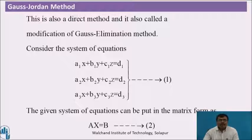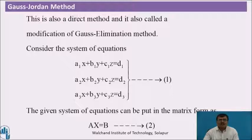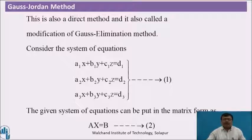I explain this method by considering three equations in three unknowns. That is: a1x + b1y + c1z = d1, a2x + b2y + c2z = d2, a3x + b3y + c3z = d3. Call it equation 1. The given system of equations can be put in the matrix form as Ax = b, call it equation 2.